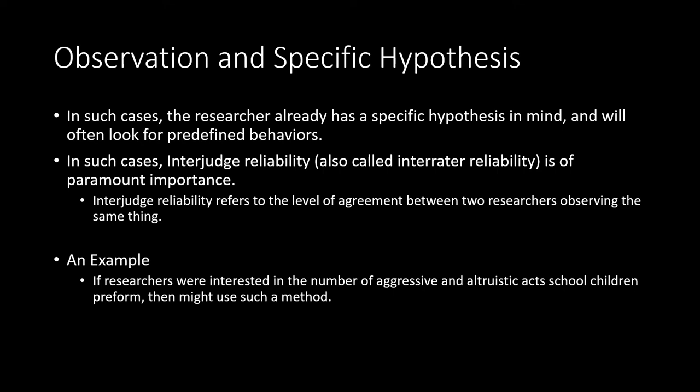Observation centered around specific hypotheses: in such cases, the researcher already has a specific hypothesis in mind and will often look for predefined behaviors. In such cases of observation, inter-judge reliability — also sometimes referred to as inter-rater reliability — is of utmost importance. This means that you have multiple judges who are all observing the same phenomena, and then their level of agreement is measured. An example of this would be if a researcher was interested in the number of aggressive versus altruistic acts school children perform over a week — they might use such a method.